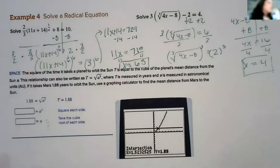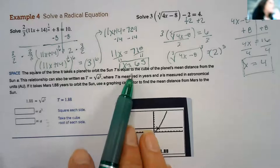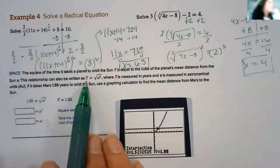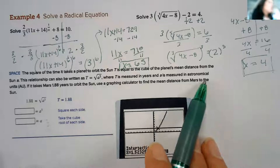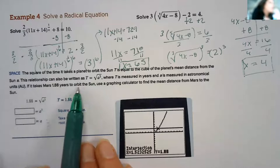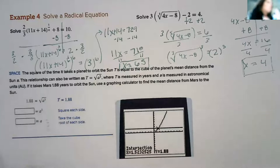I'll leave that up there while I talk about this. I'm going to read this and I'll probably finish writing. The square of the time it takes a planet to orbit the sun T is equal to the cube of the planet's mean distance from the sun a. This relationship can also be written as T equals square root of a cubed, where T is measured in years and a is measured in astronomical units. If it takes Mars 1.88 years to orbit the sun, use a graphing calculator to find the mean distance from Mars to the sun. So first we've got to get it solved for a.